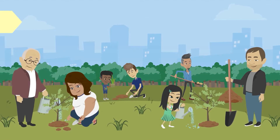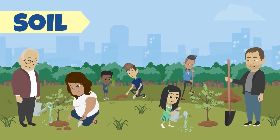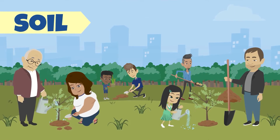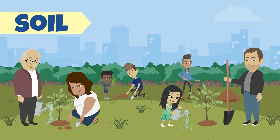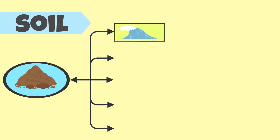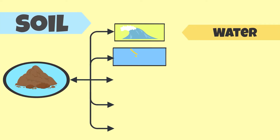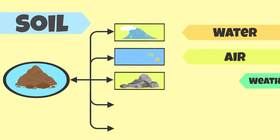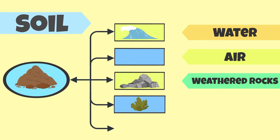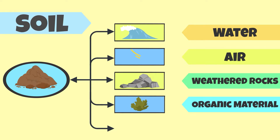Soil is important to all life because it helps support the growth of plants. Soil is made up of water, air, weathered rocks, organic material, and living organisms.